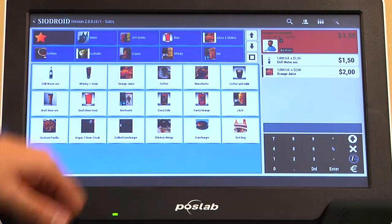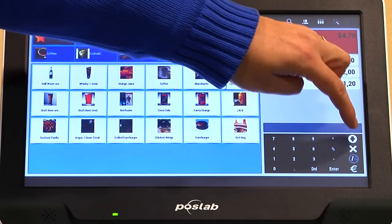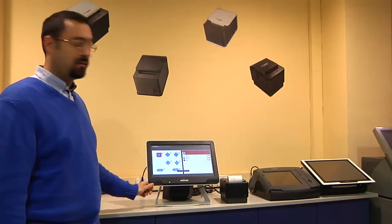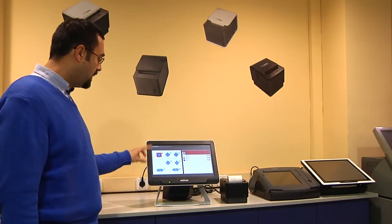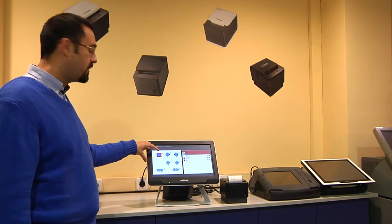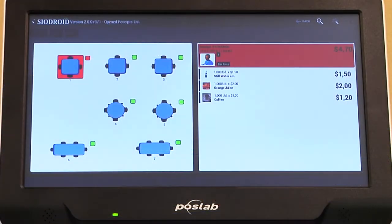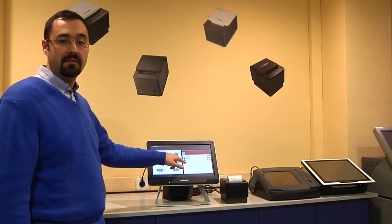Now we make some sales, some items, and with the arrow we store this sale into the table. Now this table has an orange color that means that this table is occupied and has some items inside.